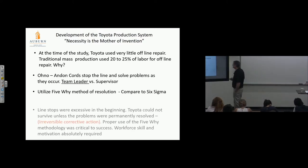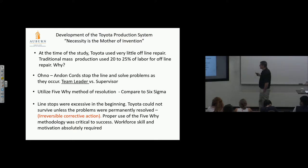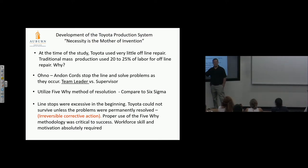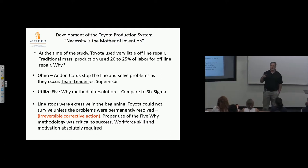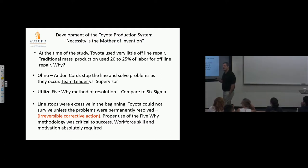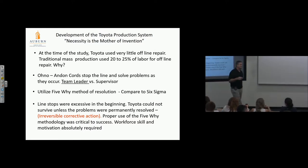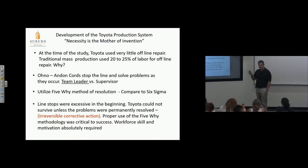If Toyota wants to push a problem-solving system, doesn't it make sense they use something with simplicity that everybody can use? I think Ono was so obsessively compulsive about standardization that he uses 5 Why not just for the method—it's more that it standardizes the thinking process of problem solving for everyone. He standardized people's minds—they must all think methodically in the same way through problems. He's reduced variation in how people attack problems. Line stops were excessive in the beginning. Toyota could not survive unless problems were permanently resolved.